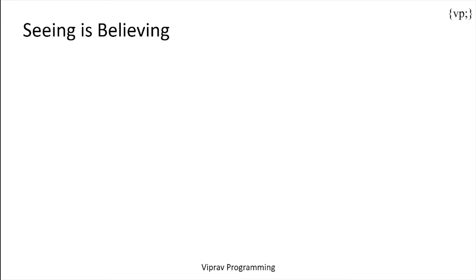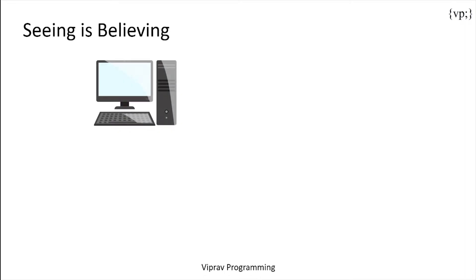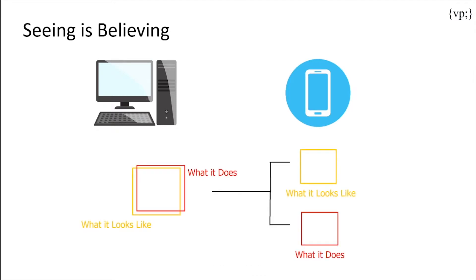You may also want to be able to change the look and feel of a component depending on what output device it is displayed on, like a desktop versus a mobile app. To accompany this need, JSF allows you to separate the definition and the appearance of the component, allowing you to create one definition and multiple renders for different client device types like mobiles, tablets, and computers.